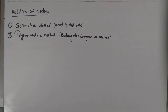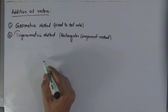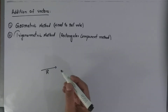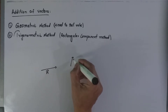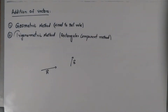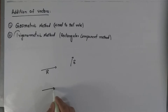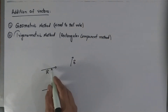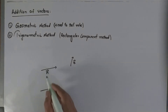We will start with the geometric method, which is the head-to-tail rule. To add two vectors using this rule, let's say we have vector A and vector B. We draw a representative vector for A with the same magnitude and same direction as vector A.